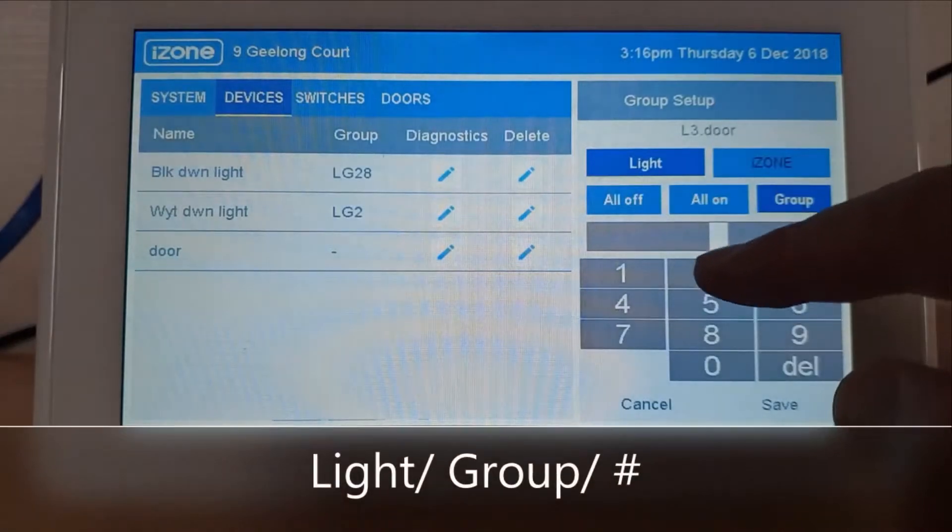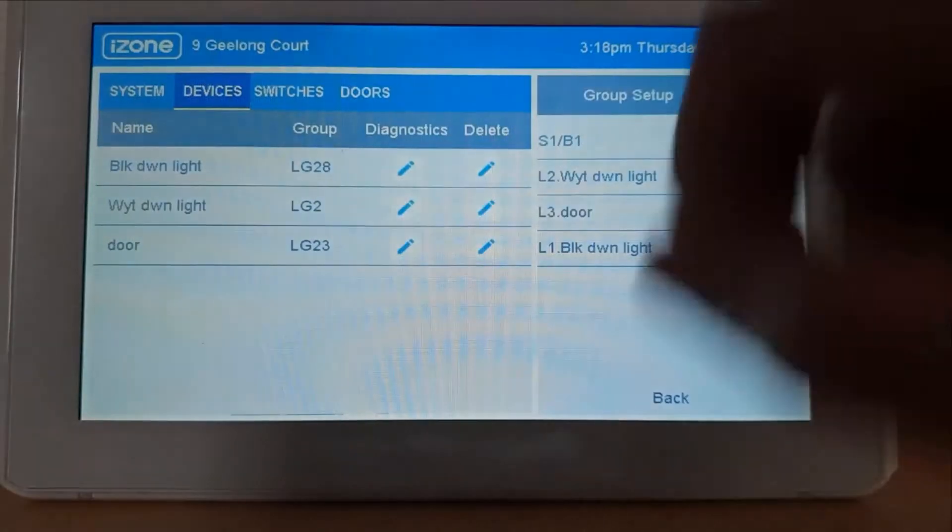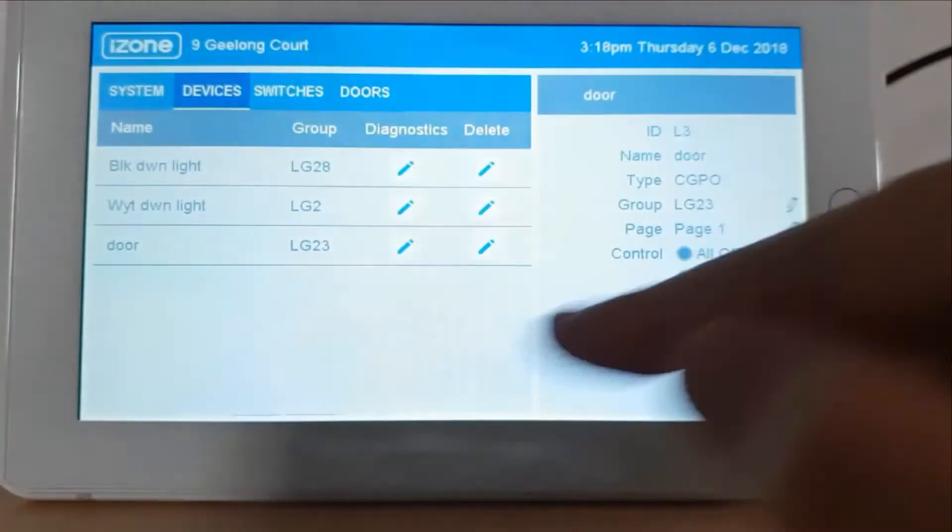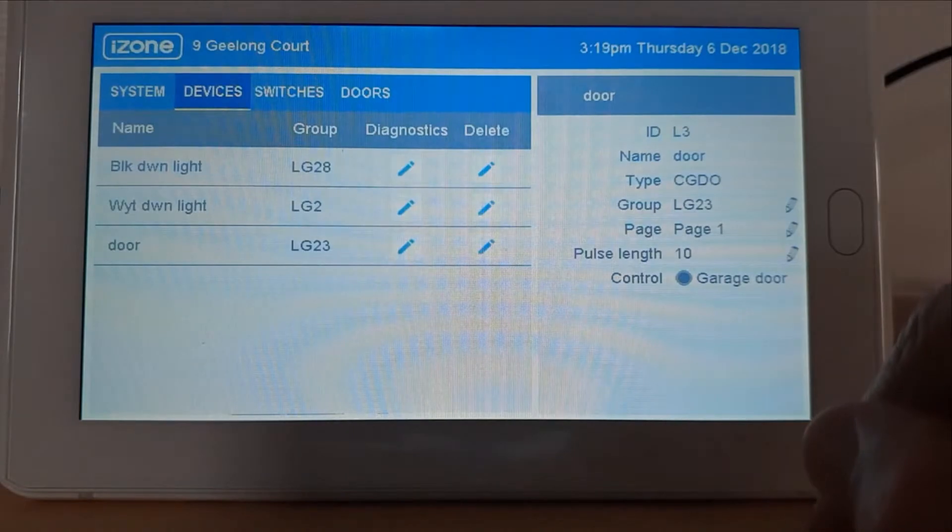Now select highlight group and assign the smart power point with a unique ID number, then press save. Now select our smart power point, then on the right hand side select garage door.